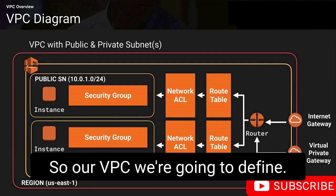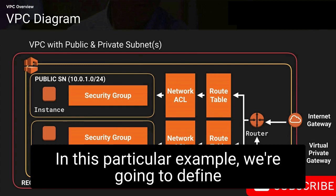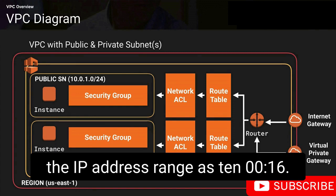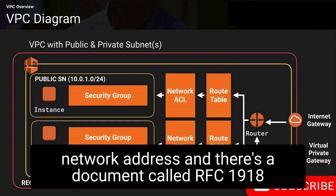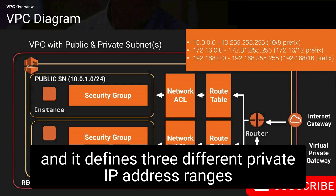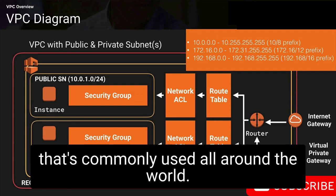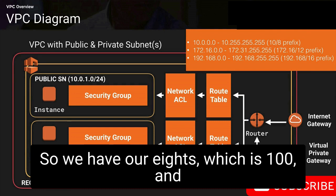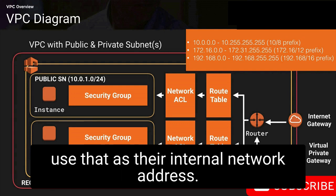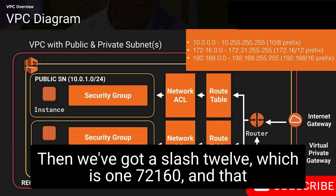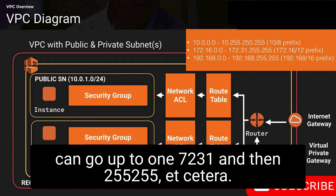Our VPC is going to be defined with the IP address range 10.0.0.0/16. That network address range is a private network address. There's a document called RFC 1918 that defines three different private IP address ranges used commonly around the world. We have slash 8s, which are 10.0.0.0 — used by almost all enterprises as their internal network address. Then we have a slash 12, which is 172.16.0.0, and that can go up to 172.31.255.255.